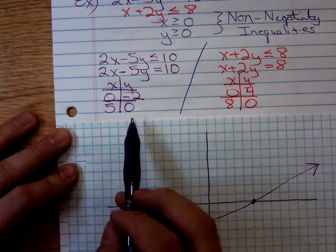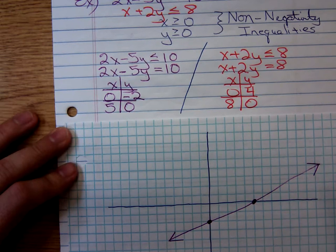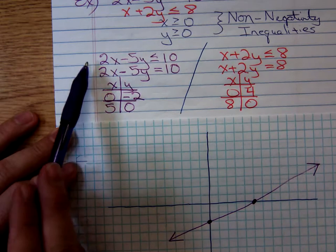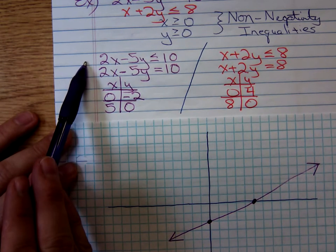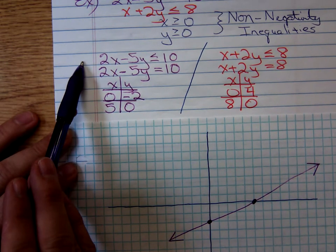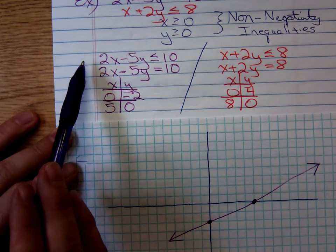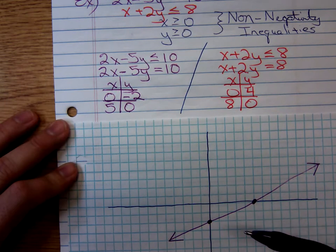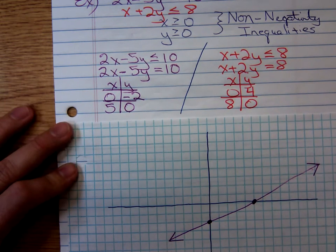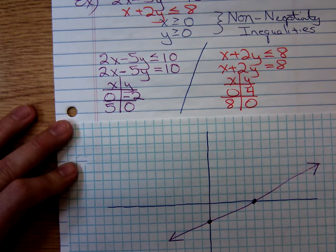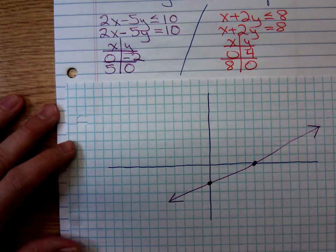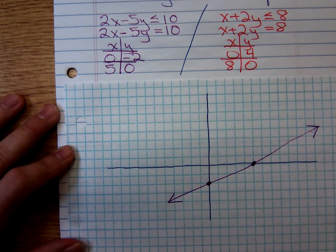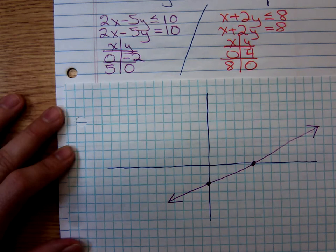So we graph the first line. Now we have to decide. Here's the purple line. One side of the purple line contains all the points that make the inequality true. The other one contains all the points that make the inequality false. So you have to decide which side contains the points that make it true. To do that, you choose a point that's not on the purple line. I'm going to test zero, zero.